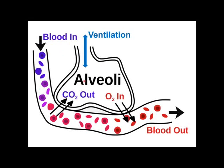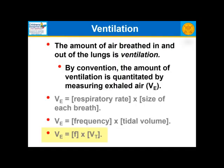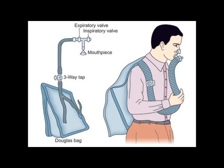Gas exchange occurs when oxygen comes in and CO2 goes out. Ventilation is the amount of air breathed in and out of the lungs. By convention, the amount of ventilation is quantified by measuring exhaled air, abbreviated VE. Historically, before computers, if we wanted to measure gas exchange we collected exhaled air through a one-way valve into a Douglas bag, which collected all of the exhaled air for calculations. So VE stood for exhaled minute ventilation.